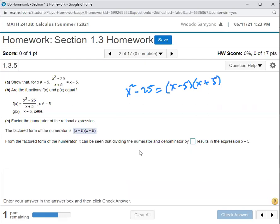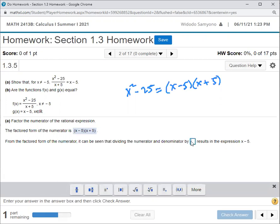And then from the factored form of the numerator, it can be seen that dividing the numerator and denominator by - by what? x plus 5, right.